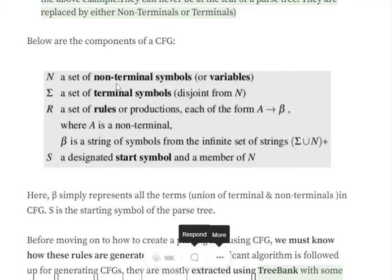These are the particular components of a CFG. N is a set of non-terminal symbols. Σ is a set of terminal symbols. Non-terminals as you saw: nominal, noun phrase. Terminals mean 'a', 'flight', or the English words.